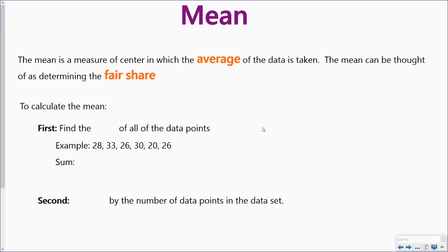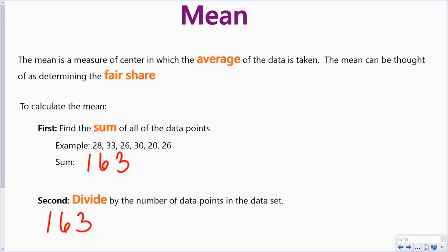To find the mean, first I'm going to find the sum of all of the data points. When I take these data points and add them up, I come up with 163. Second, I divide by the number of data points in the data set. When I count up how many numbers I have, I get six. So I'm going to take 163 and divide it by six, and that gives me 27.16 repeating.